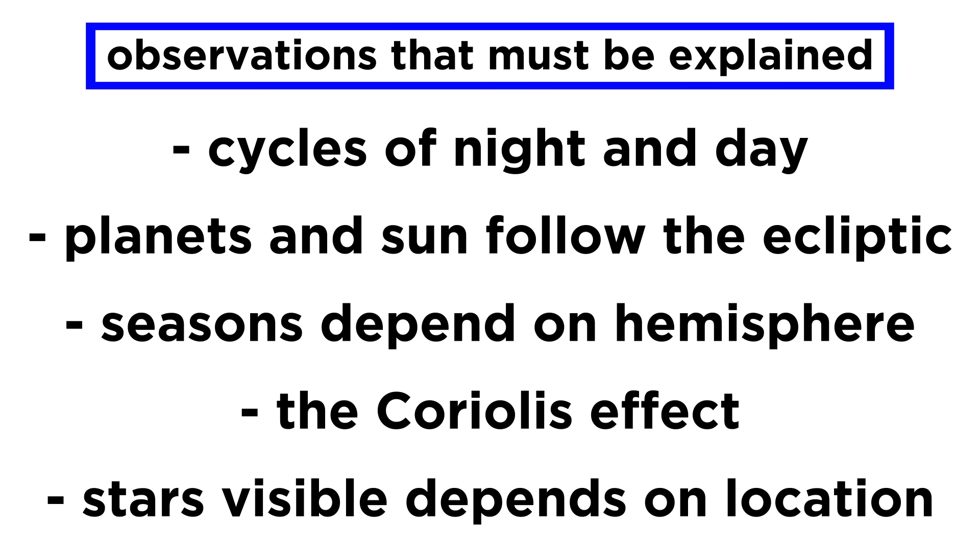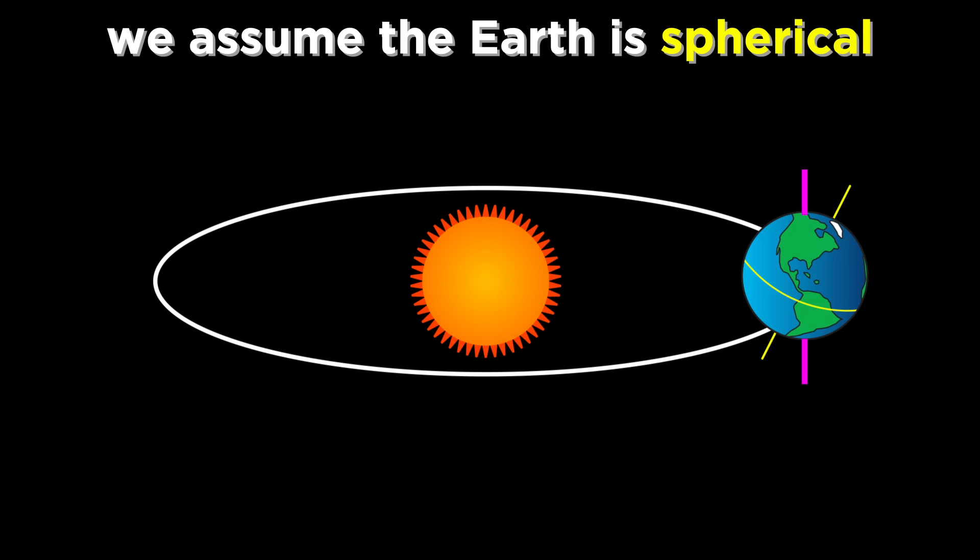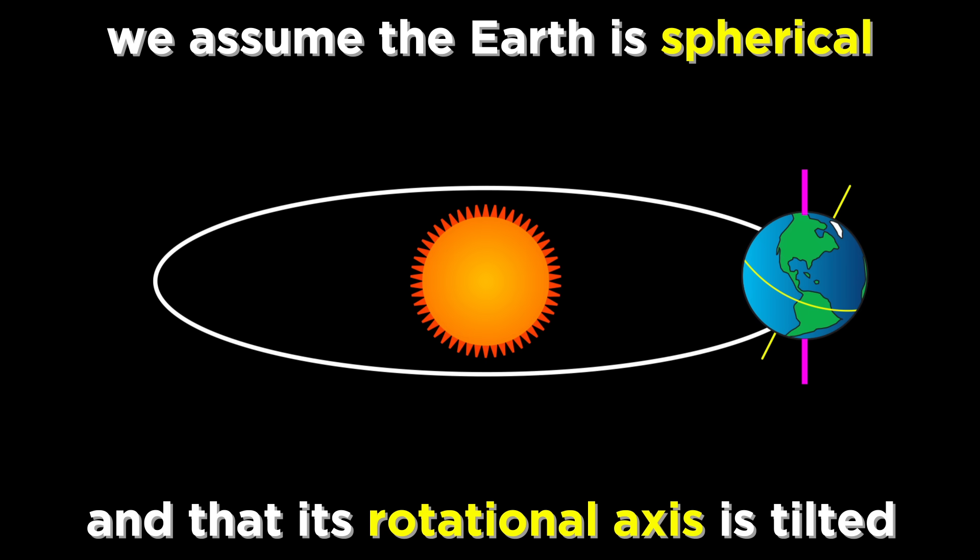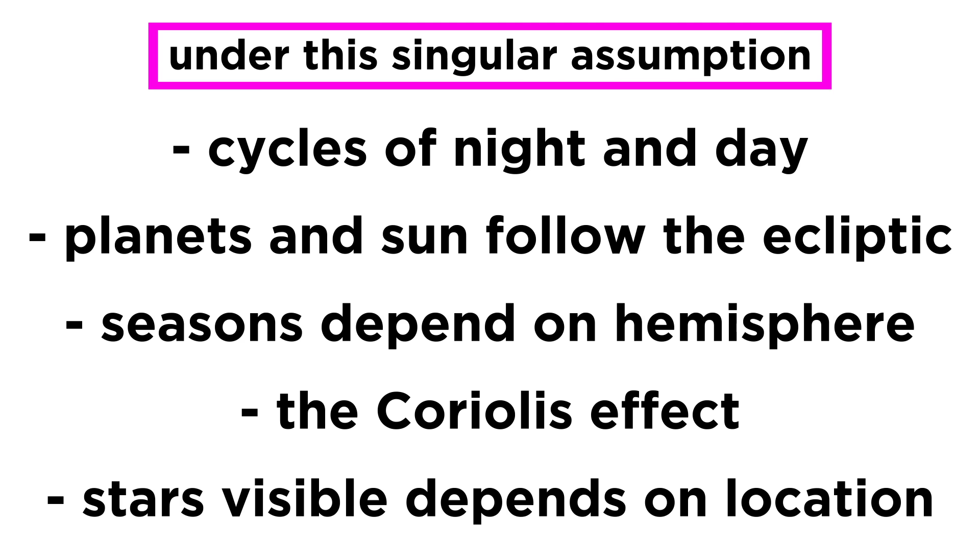These are just a handful of the observations we can make that beg to be explained. Here is where the round earth becomes obvious. All we have to do is understand that the earth is roughly spherical, spinning on an axis tilted somewhat from the vertical, and going around the sun just like all the other planets. This singular assumption makes all of the observations fall into place.